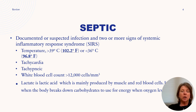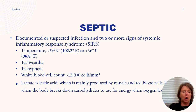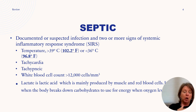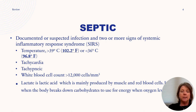Septic shock is diagnosed with a documented or suspected infection plus two or more signs from the SIRS criteria — a tool that looks at temperature, heart rate, respiratory rate, and white blood cell count. If two or more are abnormal, we're looking at probable sepsis or septic shock.